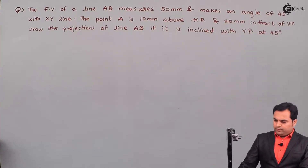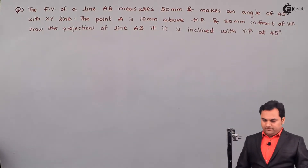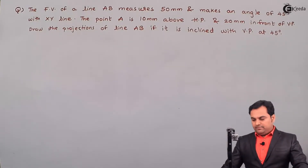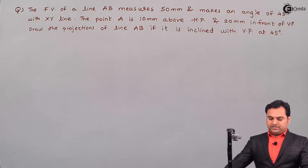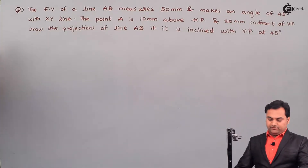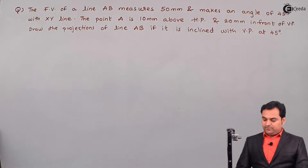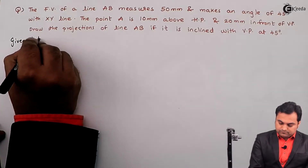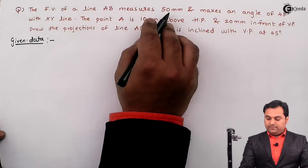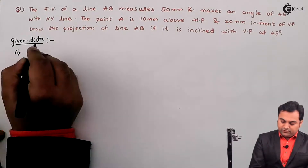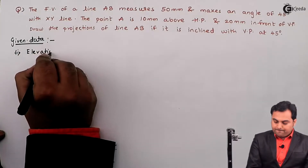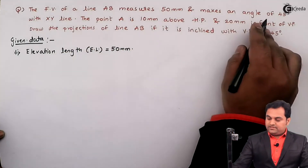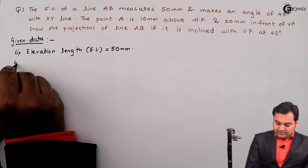Hello friends, in this video we'll see a problem on projection of lines inclined to both planes. The front view of line AB measures 50 mm — that is the length of the front view, called the elevation length — and it makes an angle of 45 degrees with the XY line, so the front view is making an angle of 45 degrees, denoted as alpha, with the XY line. It will be seen in the VP.